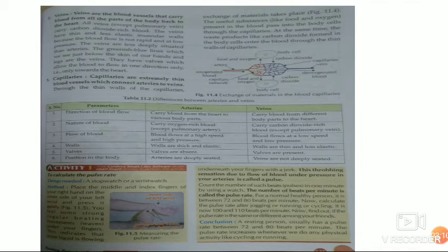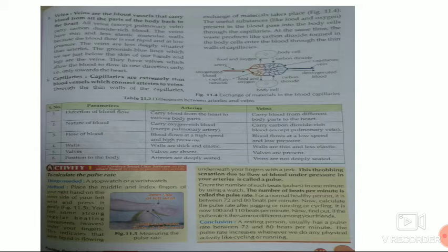Now we will read about veins. Veins are the blood vessels that carry blood from all the parts of the body back to the heart. All the deoxygenated blood from our body is collected by veins and brought to the heart. The heart then sends this deoxygenated blood through the pulmonary artery to the lungs, where carbon dioxide is released and oxygen enters the blood. So, all the veins except pulmonary vein carry carbon dioxide-rich blood. Only pulmonary vein carries oxygenated blood from the lungs to the left auricle of the heart.